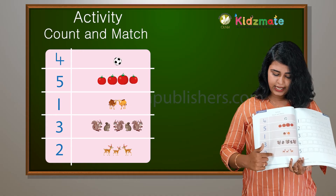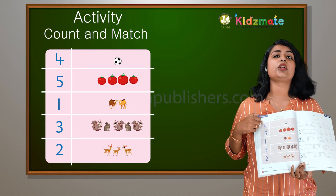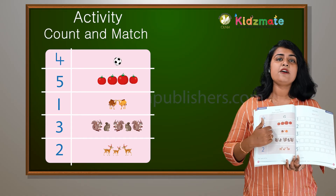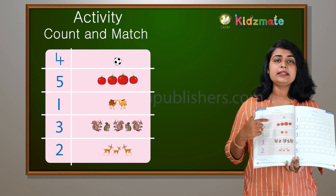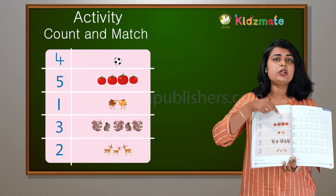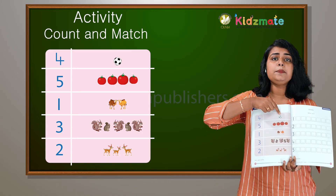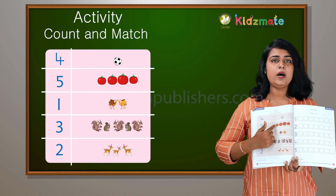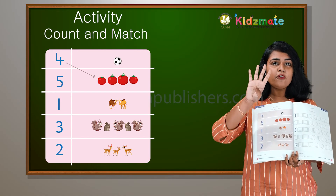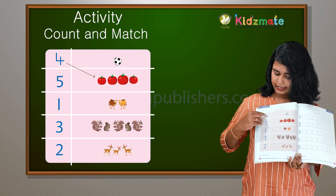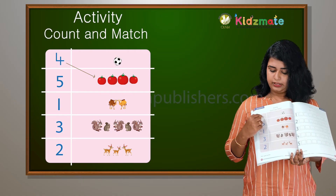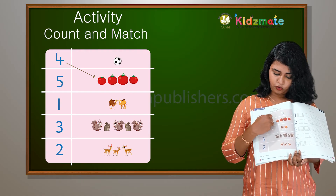This is 4. You should count 4, page 4. How many tomatoes? 1, 2, 3, 4 — so 4 tomatoes. You should match this number with these tomatoes. You will add one pencil to make 4 tomatoes.